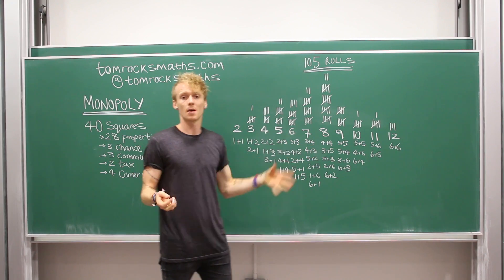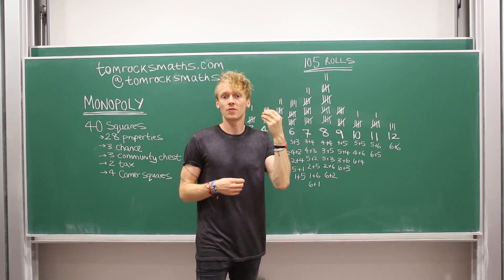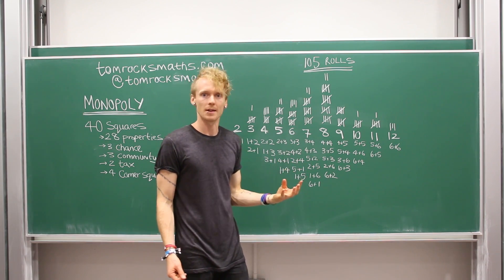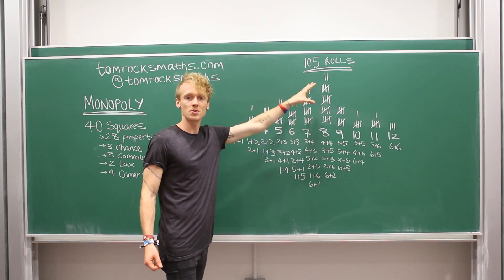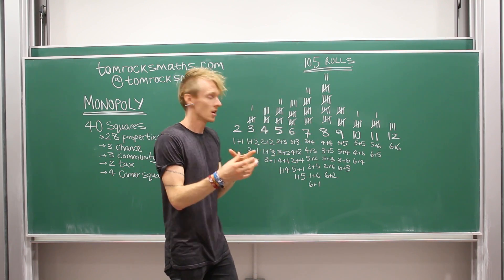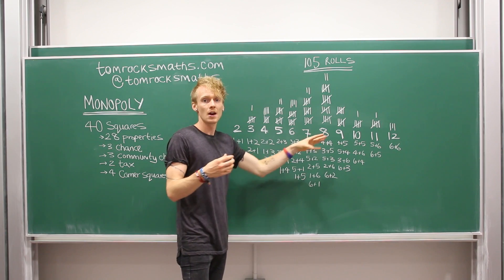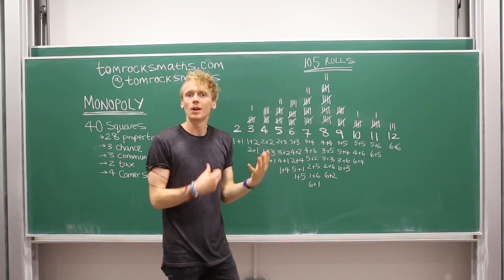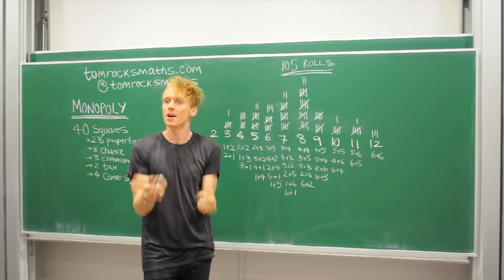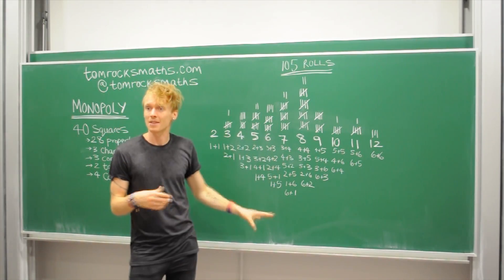And then for a six and eight they both have five different combinations and so five out of 36 rolls you would expect to get a six or an eight. So they're the next most popular numbers. And you can see this in our distribution. Of course it doesn't quite match perfectly and that's because the more rolls you do the more likely it is to match perfectly. So if I'd done a thousand rolls instead of a hundred and five it would look a lot more similar in shape.